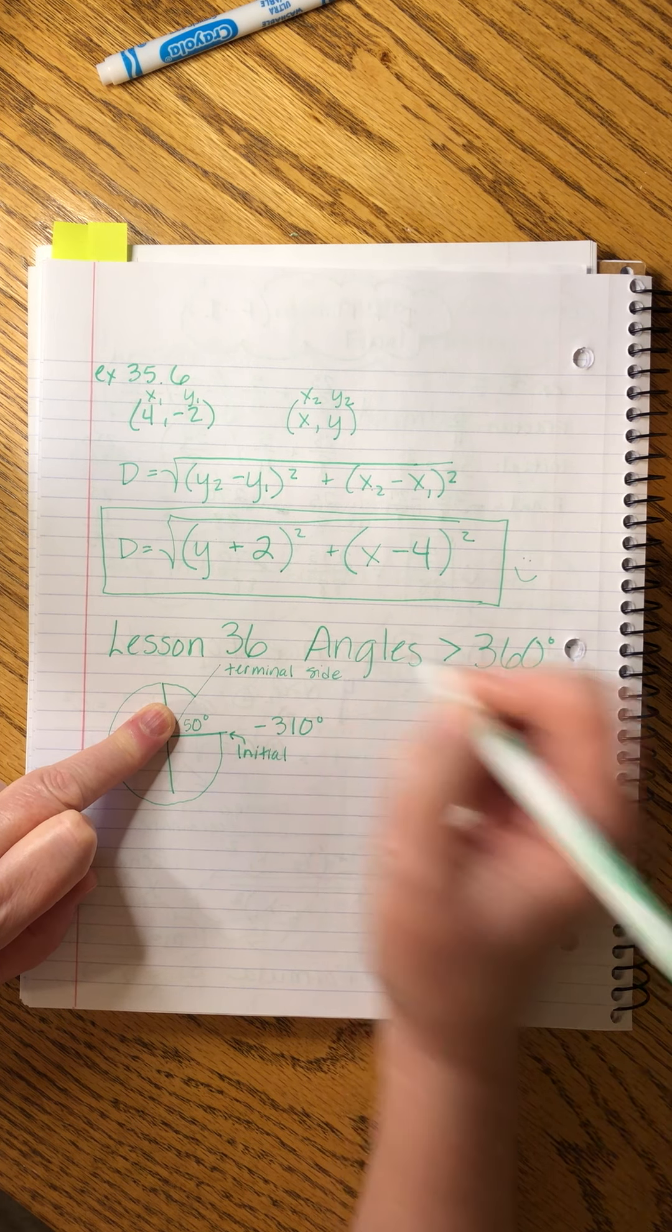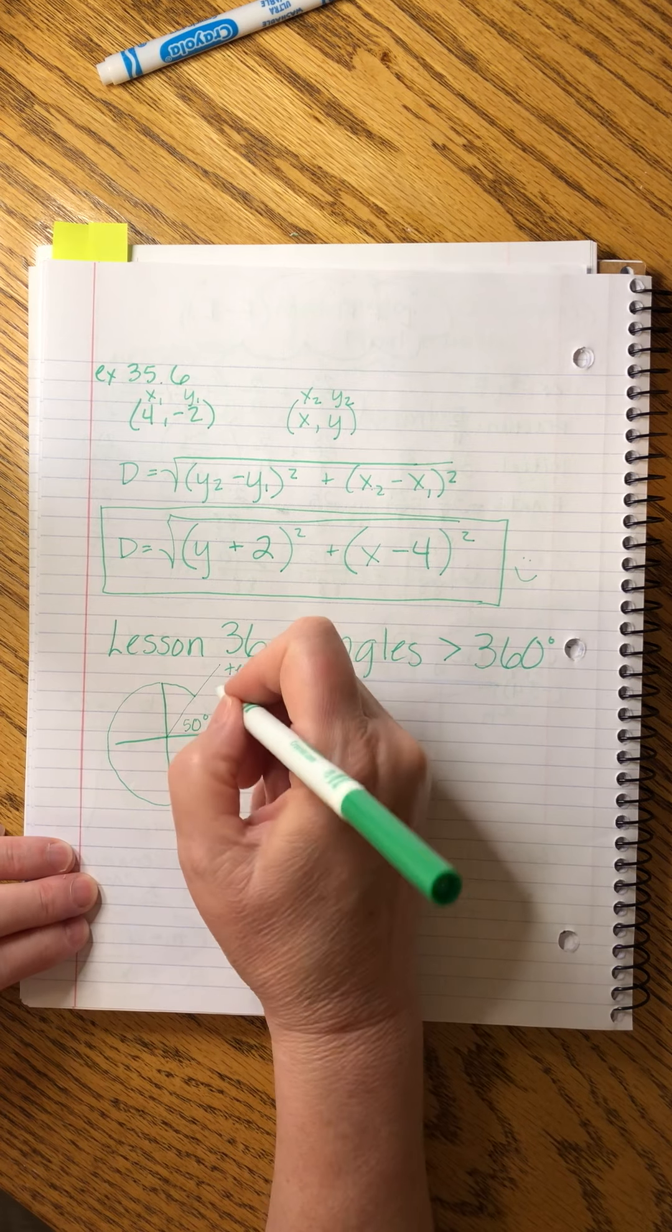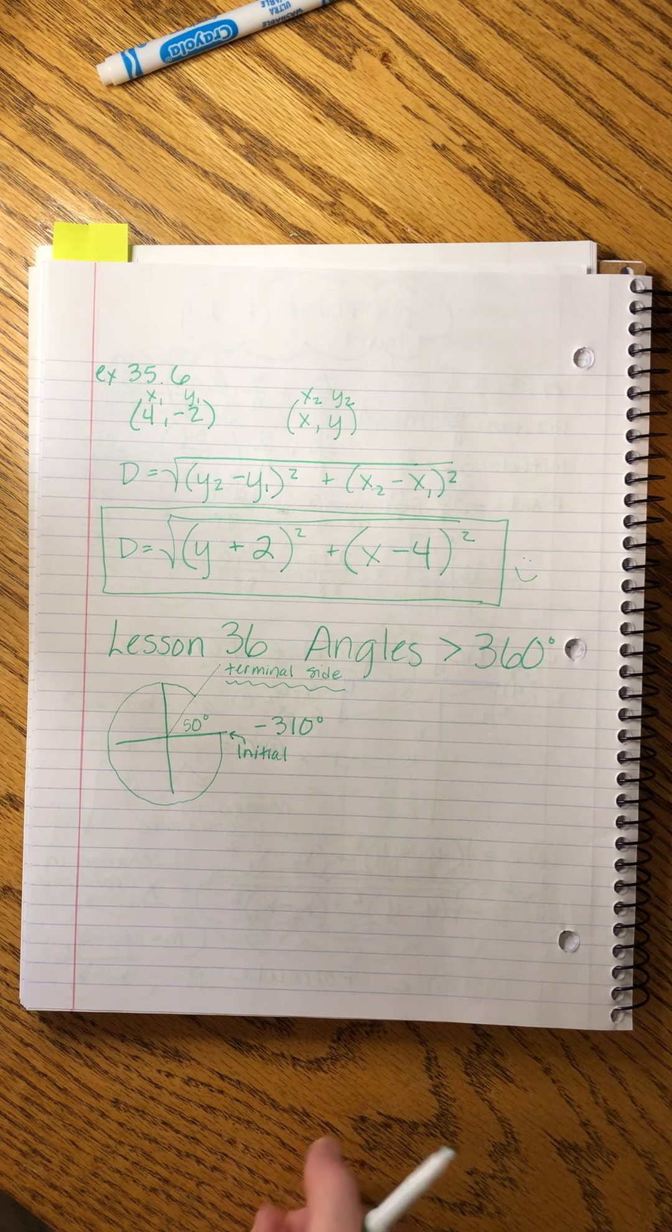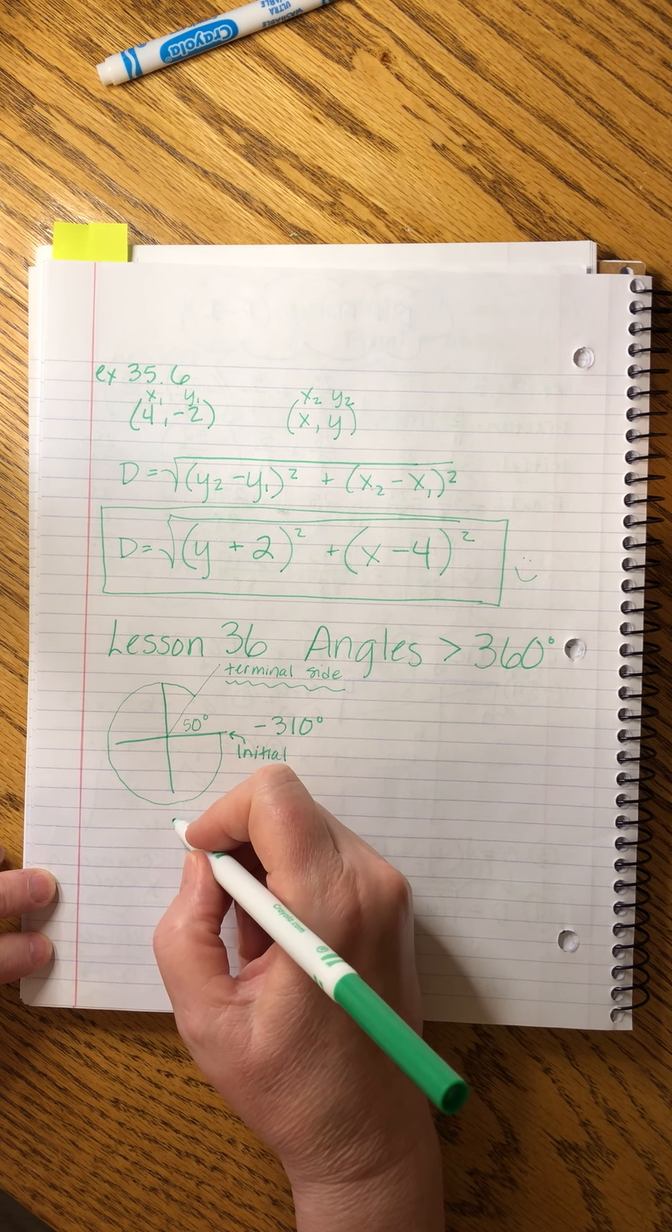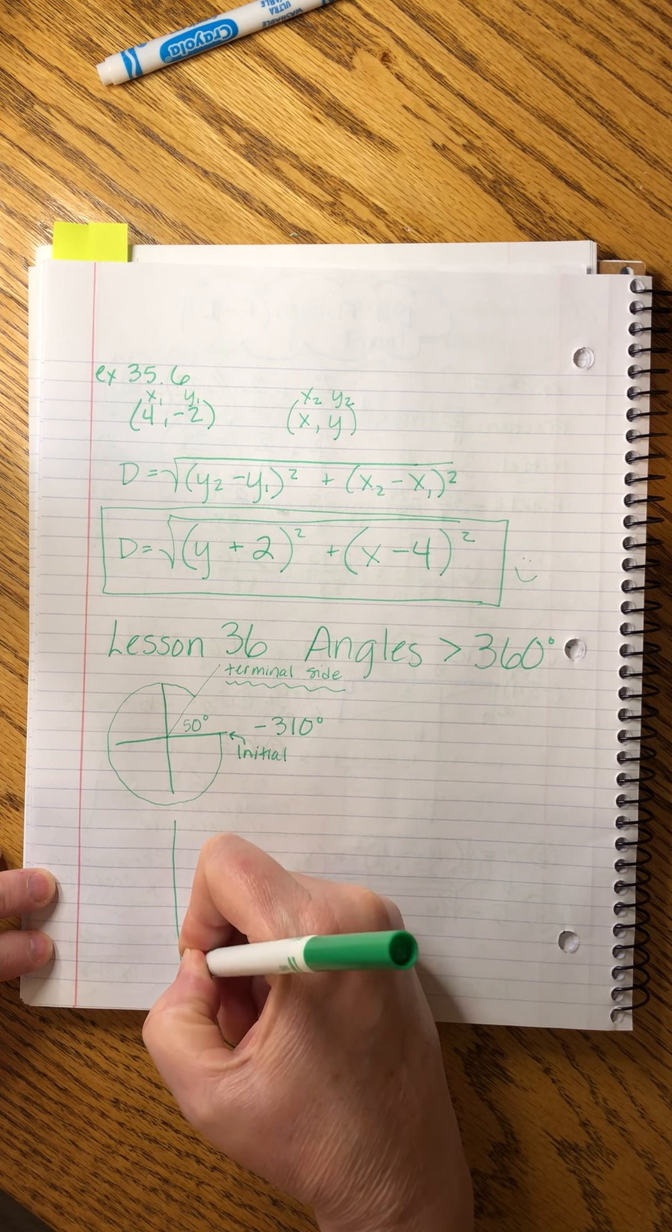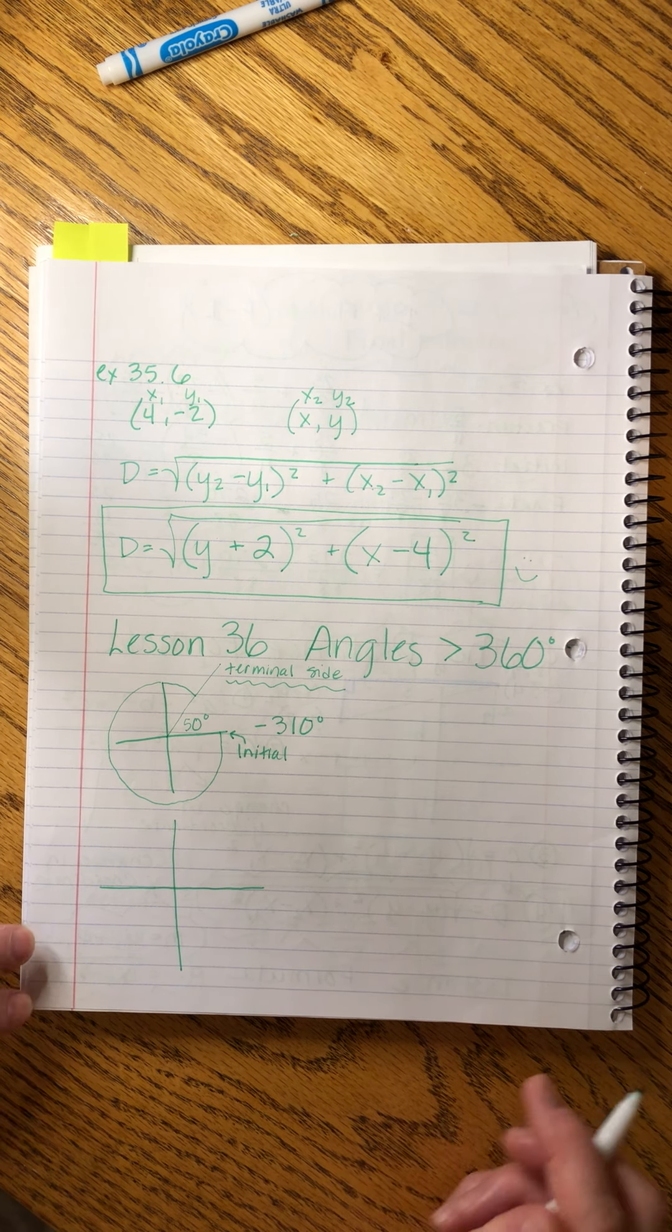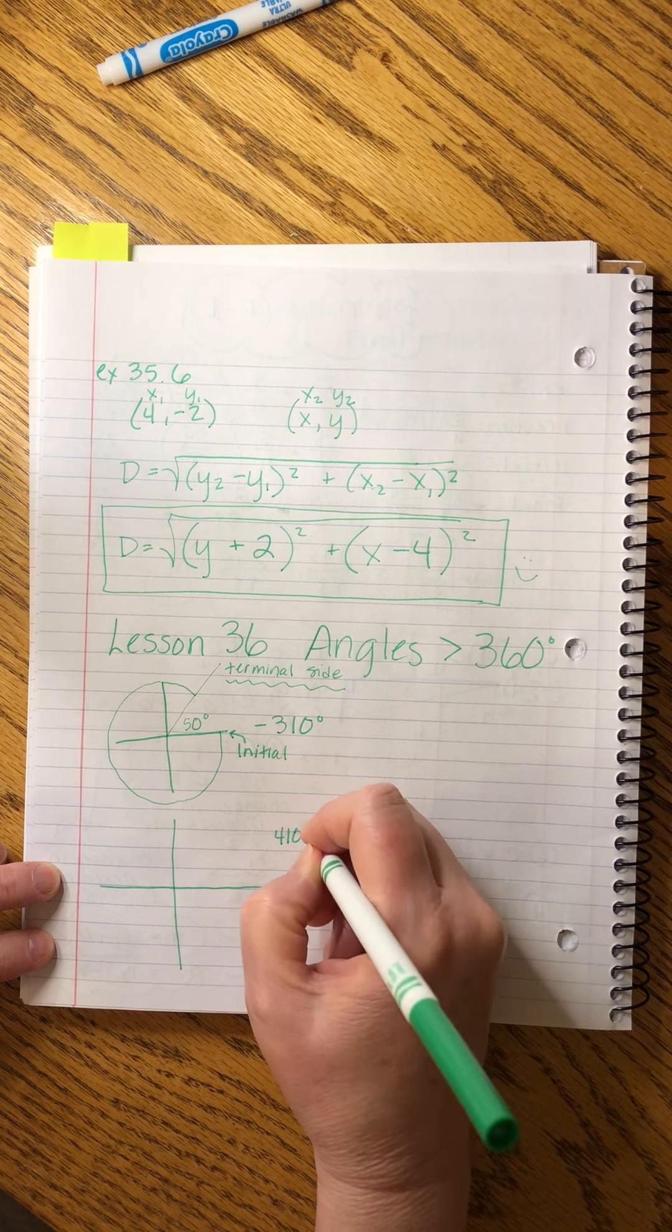Now what we're going to talk about, we've already done this. What we're going to do is take this idea of the terminal side and apply it to something else. Now, what if John starts us with a 410 degree angle.